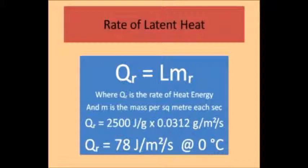The power or rate of heat energy supplied to the atmosphere from the condensation of water vapor in the atmosphere is QR, and that is equal to the specific latent heat L multiplied by the rate of mass condensing in the atmosphere MR. The latent heat released from water condensing at 0 degrees Celsius is 2500 joules per gram. So for our 0.0312 grams of water condensing each second into a square meter of atmosphere, the rate of supply of latent heat is 78 watts per meter squared. A watt being a joule of energy released every second.